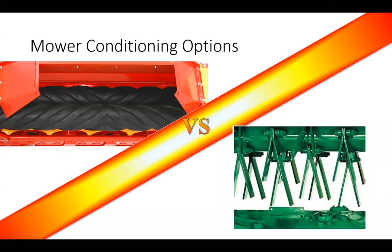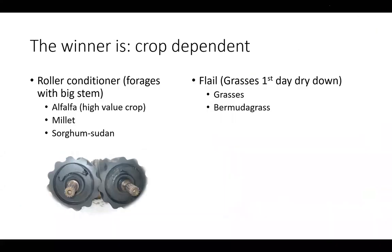Looking at conditioner options, we generally have two: rubber rollers or flails, which help condition the material and speed up drying. The better one is crop dependent. I lean towards rollers because for alfalfa — your high-value crop — you need to protect the leaves, and rubber rollers won't beat and knock them off. That's where most of your value is. Flails work well for just grasses like pearl millet, Sudan grass, sorghum-Sudan grass, and bermuda grass.